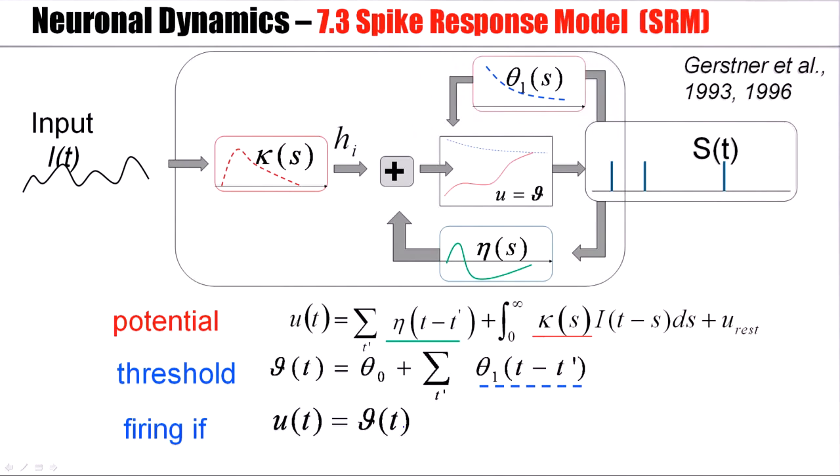The spike response model can be described as a sequence of filters. Input is filtered with the filter kappa, comes here. This leads to an integration towards the threshold. If the threshold is crossed, we have a spike train in the output. And this spike train causes two different effects. It contributes to a spike after-potential that shapes adaptation and refractoriness, and it also contributes to an increase in the threshold that again shapes adaptation.